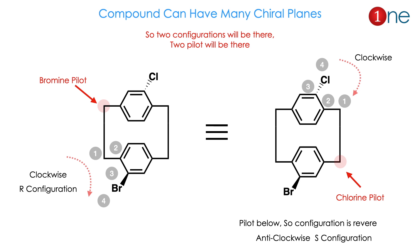A compound can have many chiral planes, just as a carbon can have many chiral centers. The compound shown here has two substitutions — one bromine and one chlorine. There will be two pilot atoms and two configurations. For the bromine side, the pilot atom is above: numbering one-two-three-four is clockwise, giving R configuration. For the chlorine side, the pilot atom is below; numbering one-two-three-four appears clockwise, but since the pilot is below, the configuration is reversed, giving S configuration. So remember: a compound can have many chiral planes.